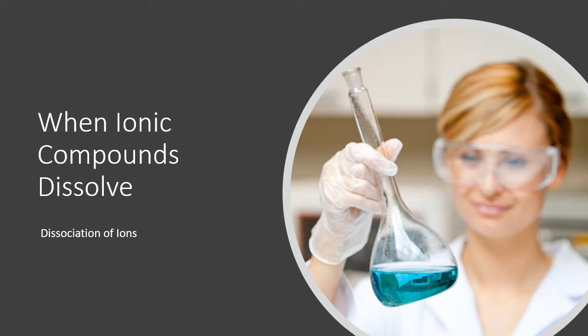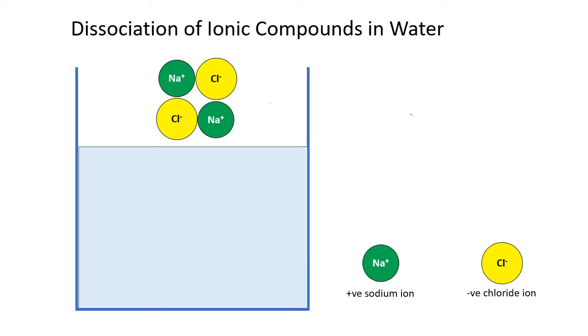In this video we're going to look at what happens when ionic compounds dissolve in water. Let's take a little crystal of sodium chloride made up of positive sodium ions, the green circles, and negative chloride ions, the yellow circles.